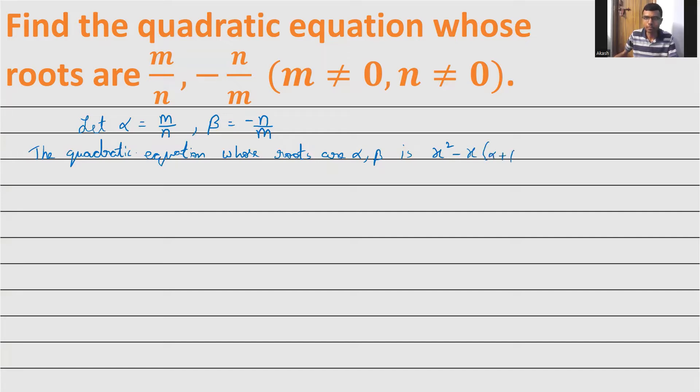In this equation we don't know alpha plus beta and alpha beta, but we know what alpha and beta are. Based on that we'll find alpha plus beta and alpha beta, then substitute. Therefore, one.